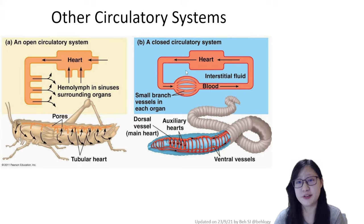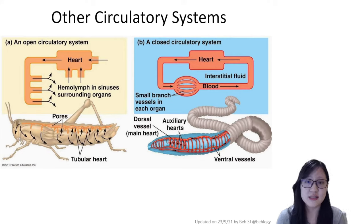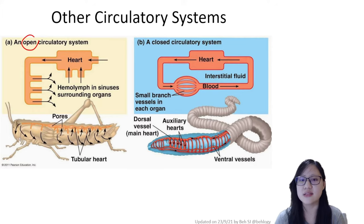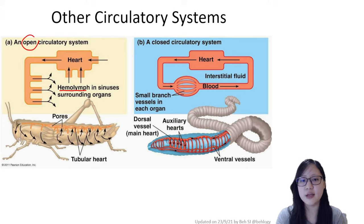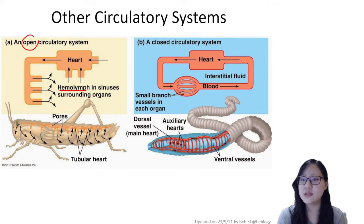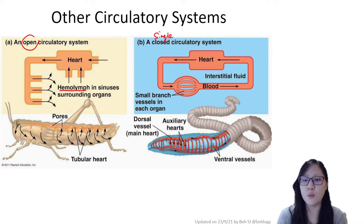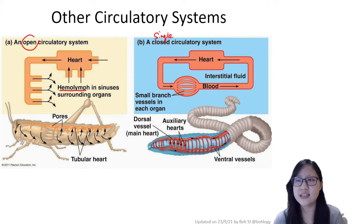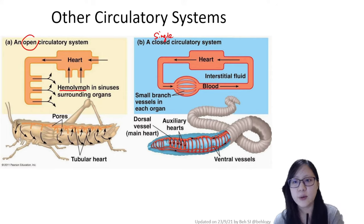The opposite of a closed circulatory system is an open one, where blood does not need to stay in the vessels. Insects, for example, have a special fluid called haemolymph that surrounds the organs — the vessels are open and not connected to another vessel, allowing it to mix around the organs. A single closed circulatory system, like in fish, is one where blood is enclosed in vessels but passes through the heart only once. This comparison is not an essential part of the syllabus but helps illustrate how our closed double system differs.